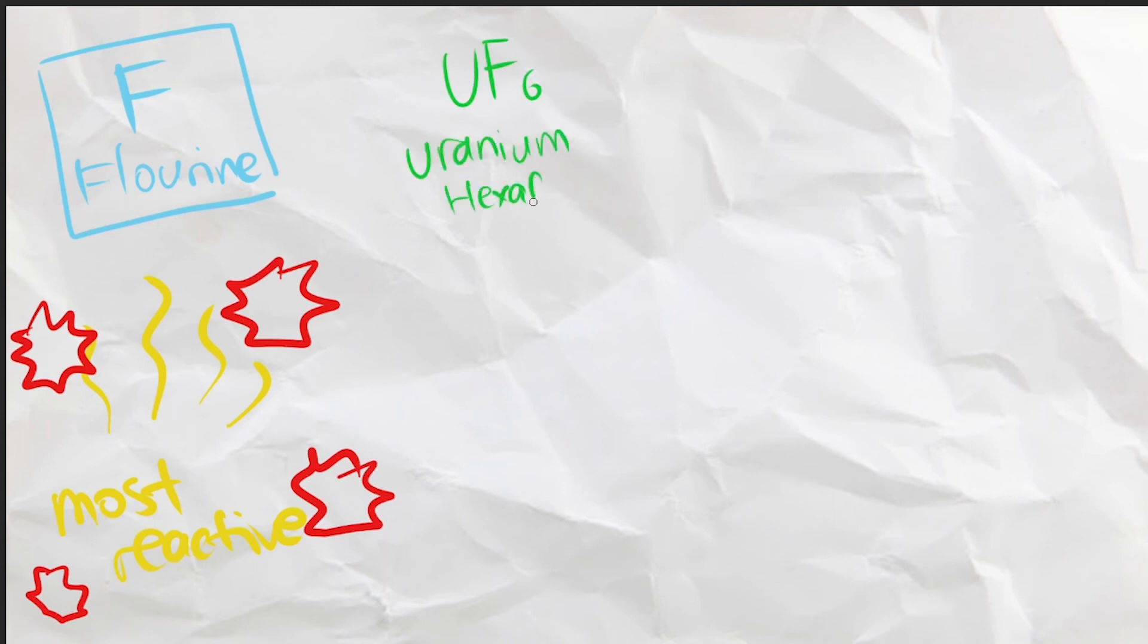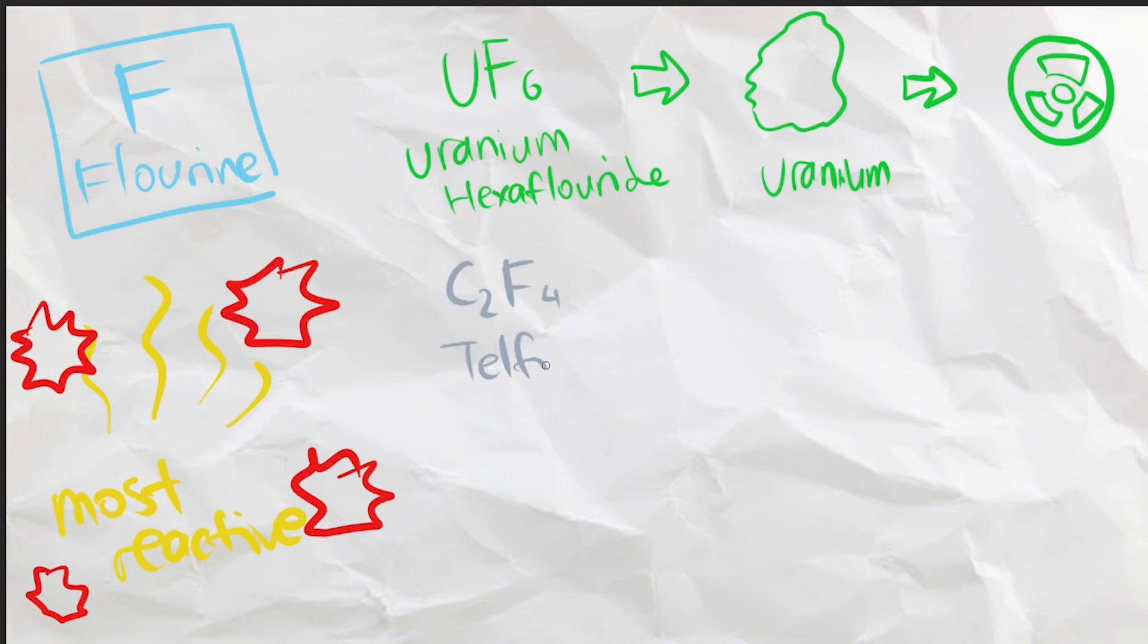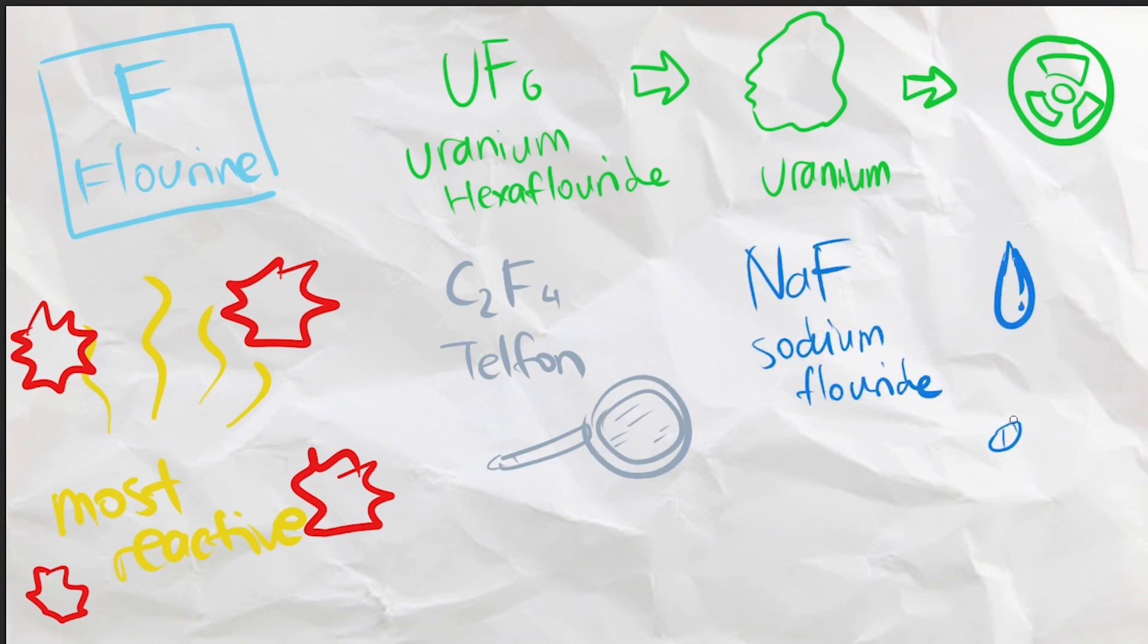Next we have fluorine, a yellow-green gas, which is the most reactive non-metal we have discovered. For this reason, it is made into uranium hexafluoride, which is used to enrich uranium to use as fuel for nuclear reactors. Fluorine is also used to make teflon, the type of plastic you see in non-stick pans to make sure food doesn't stick, and also used to make sodium fluoride, which is found in drinking water for purification and toothpaste.